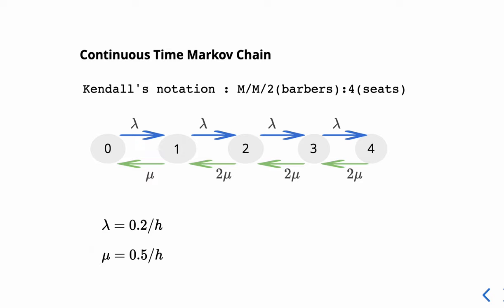This is a Continuous Time Markov Chain. This is the diagram and Kendall's notation: M/M/2, where 2 refers to the two barbers and 4 refers to the seats.